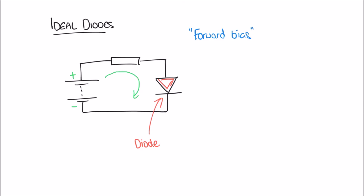Forward bias means the diode will allow current to flow. We can imagine that a forward-biased diode isn't impeding the current at all — we can think of it almost like a wire. If we measure the voltage across the resistor VR and another voltmeter VD measuring across the diode, in an ideal diode the diode acts as a wire with no resistance, so it has no voltage drop.